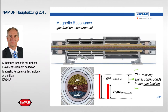So now, in addition to having measured the velocity of all the components in the measurement section, we also have the possibility, by looking at the signal amplitude, to establish how much of the measurement section was filled with liquid — the mixture of oil and water.